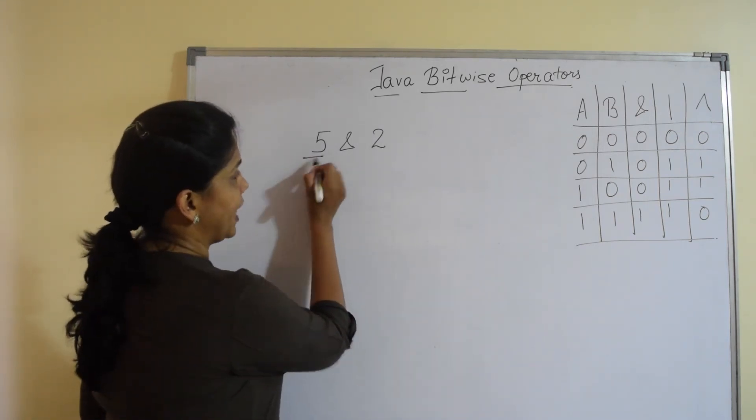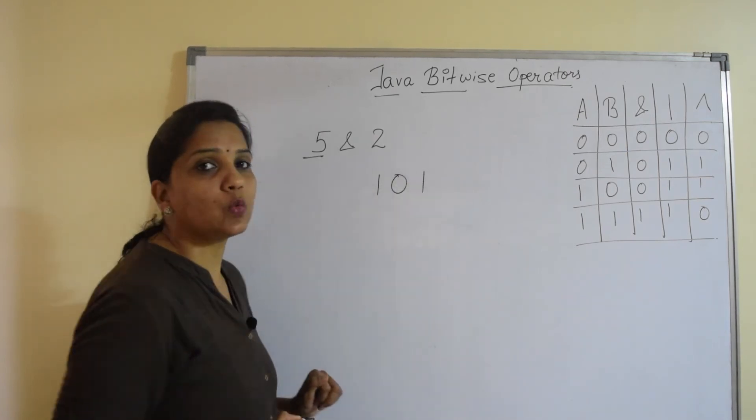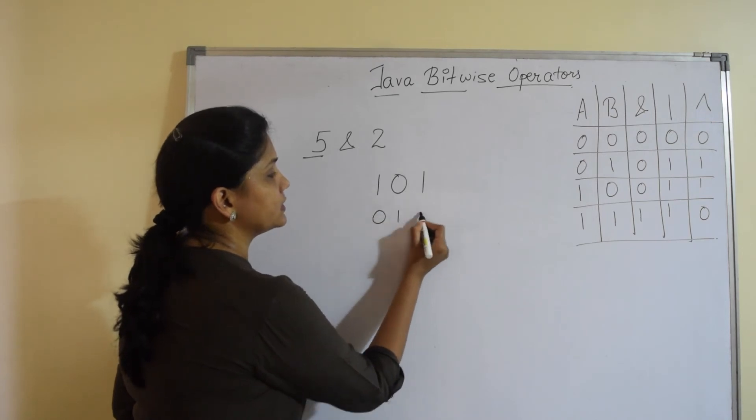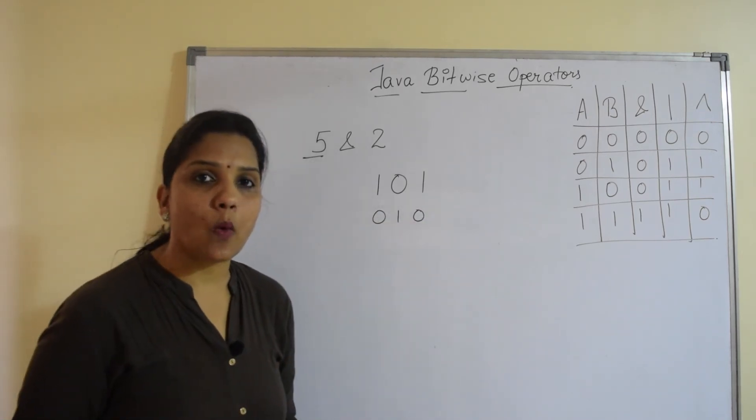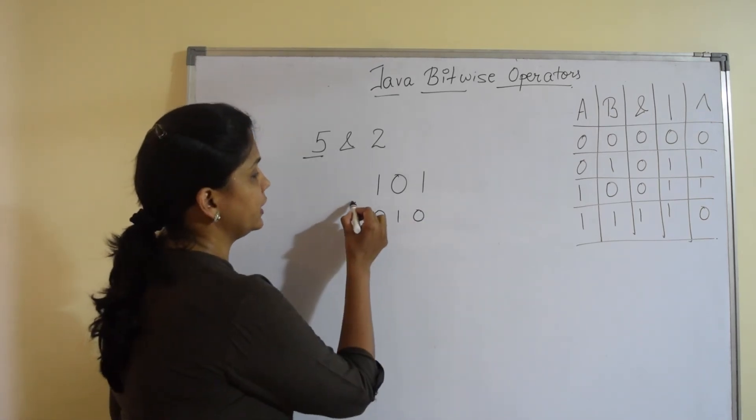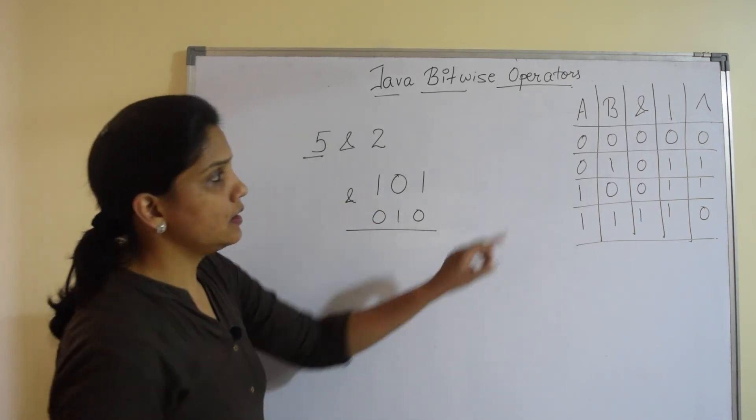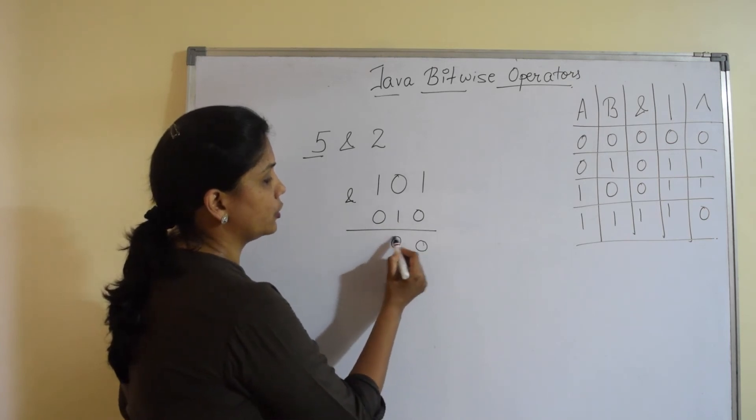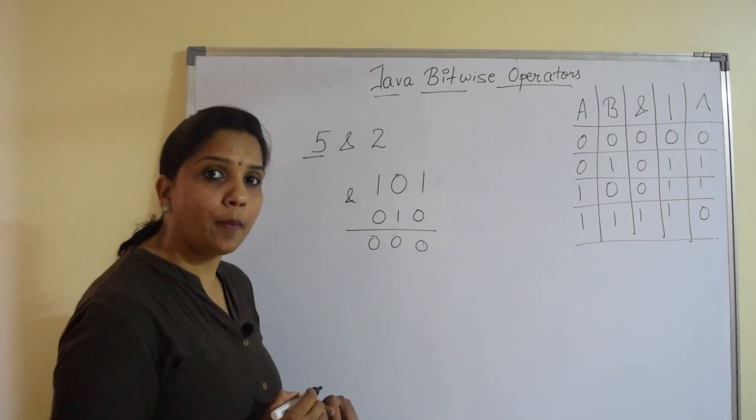Java understands this ampersand to be interpreted as a bitwise AND. Now how it does? We understood the binary number system. Remember 5 in binary is written as 101. 2 in binary is written as 010. Now if we need to apply the AND operator, remember the truth table, if any 1 bit is 0, the output is 0 for the AND operator.